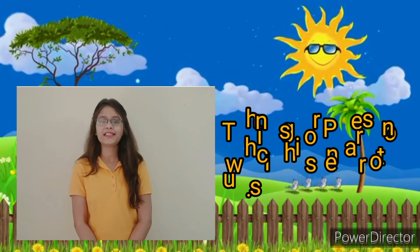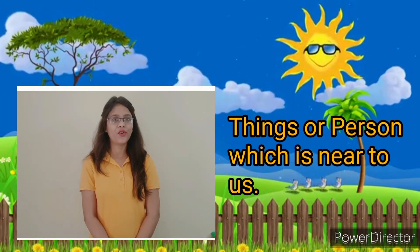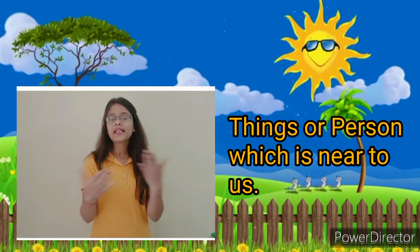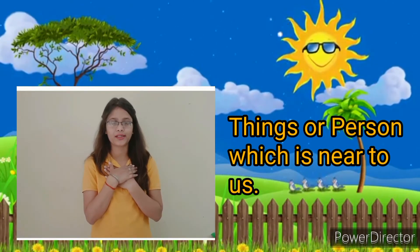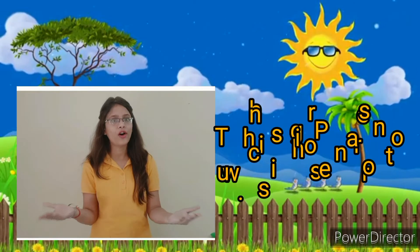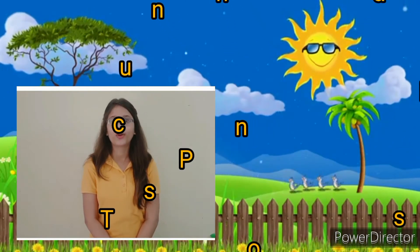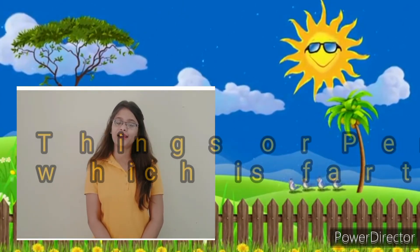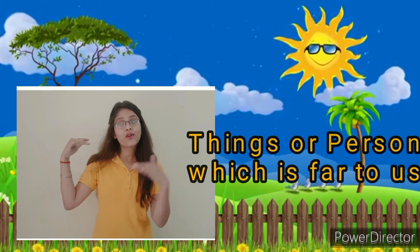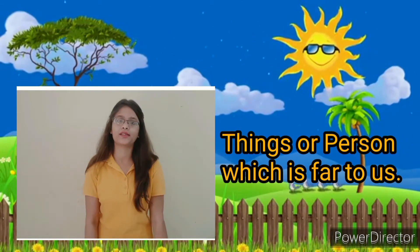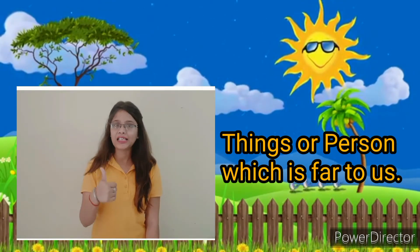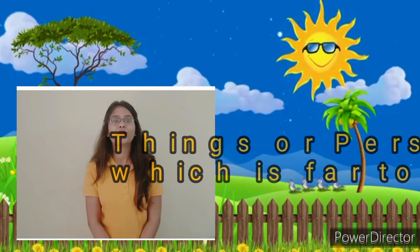Okay, I will teach you. 'This' is used for things or a person which is near to us or closest to us. And what is 'that'? 'That' is used for things or a person which is far from us. So are you ready? I will teach you with some examples.